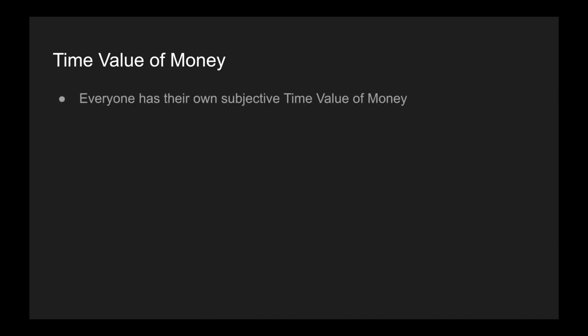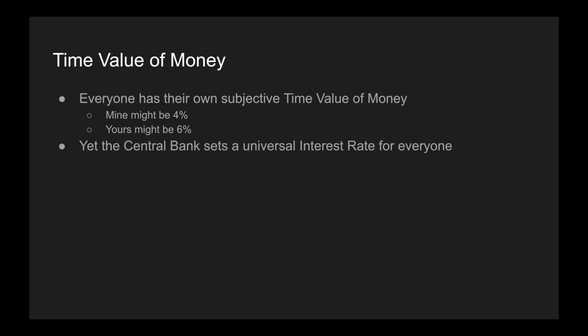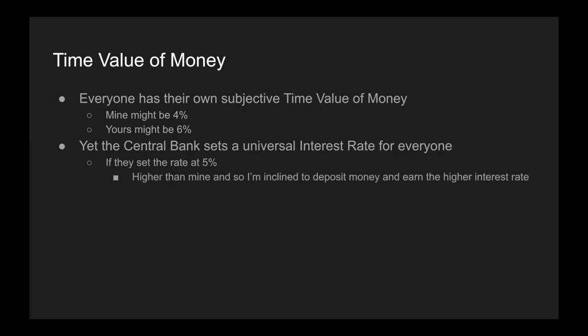It's important to see that everybody has their own subjective time value of money. Mine might be 4%, where I would have taken the second option in the second choice. Yours might be 6%, where you'd only have taken the second option in the third choice. But the central banks set a universal interest rate for everyone. If they set that rate at, say, 5%, it's higher than mine, so I'm inclined to deposit money and earn the higher interest rate. That 5% is also lower than yours, so you're inclined to borrow money and pay the lower interest rate.